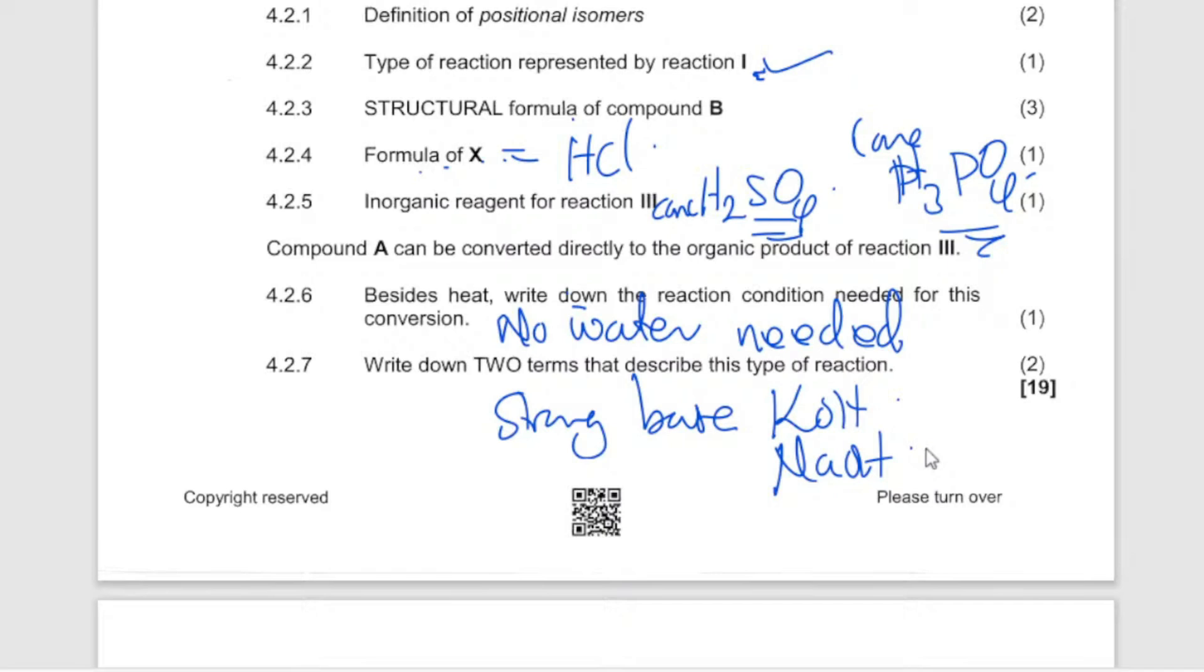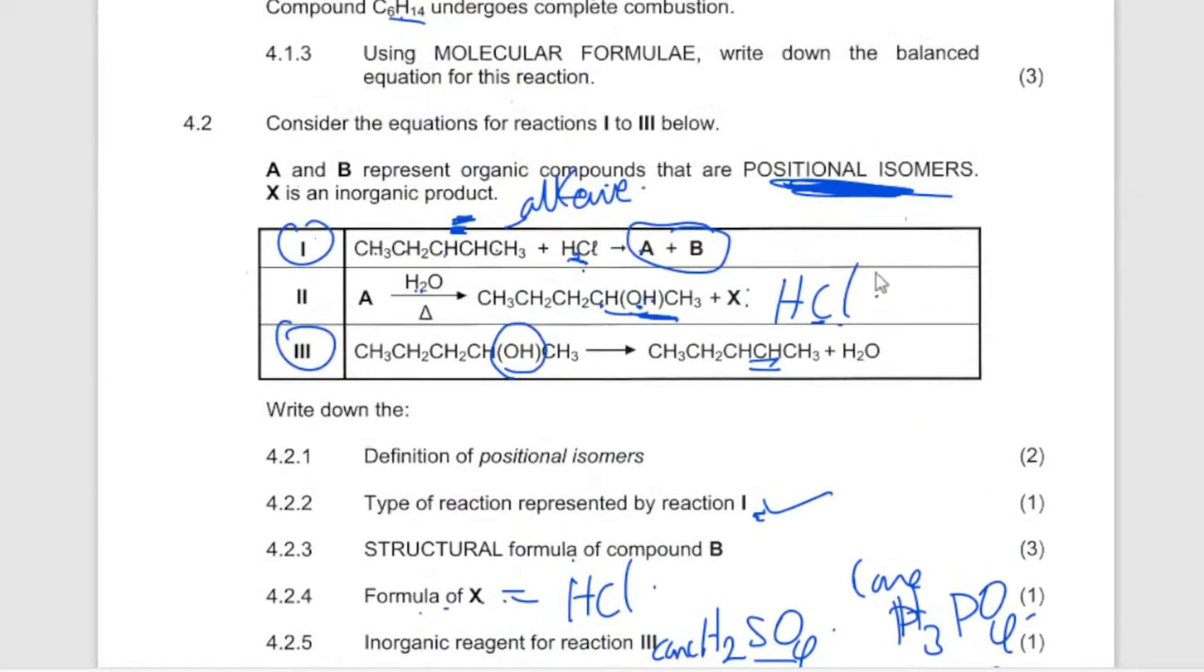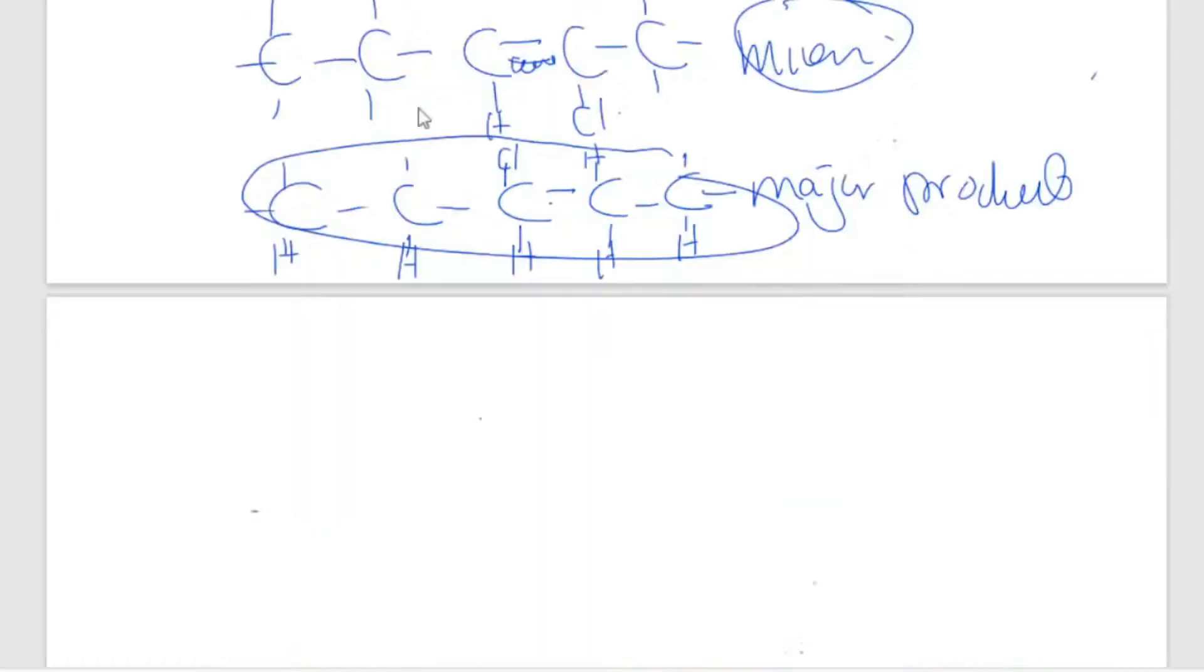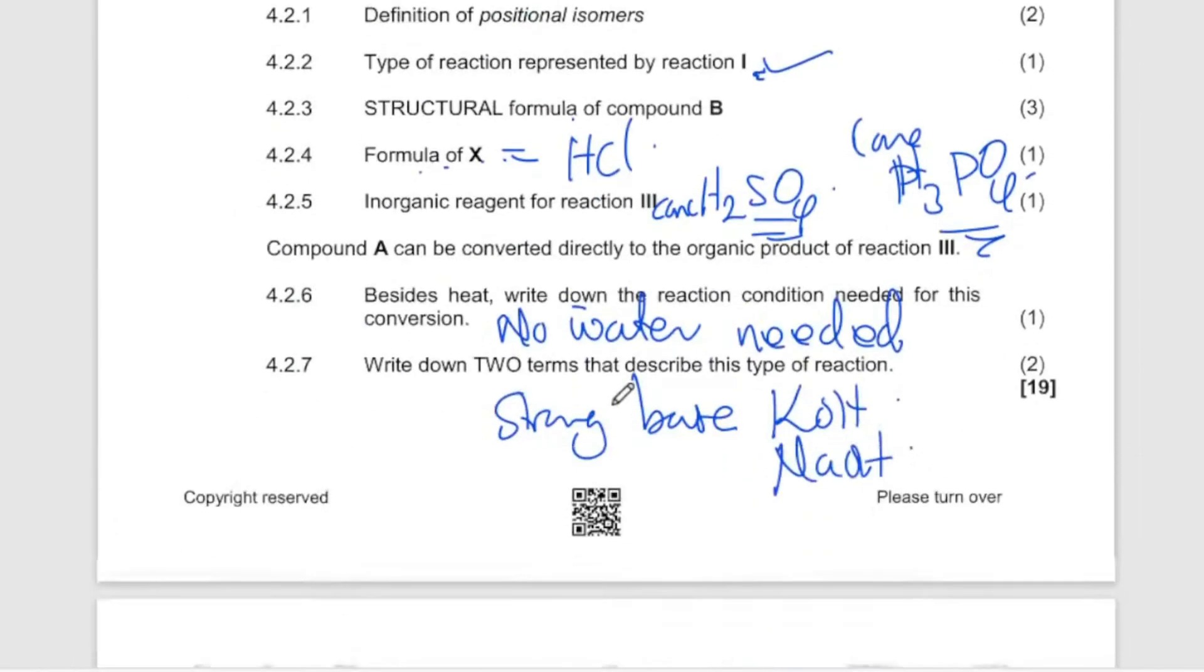Write down two terms that describe the type of reaction. So the type of reaction, remember you are from hydrogen halide, halogen, from this, the haloalkane. You are from the haloalkane, then you are going to an alkene, the double bond. So it means that first of all I am removing this and this. So I can say elimination. Yes, so you are saying elimination. Let me see, what did they say here. Oh, they said...